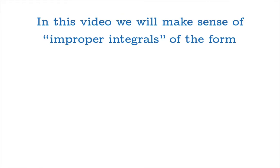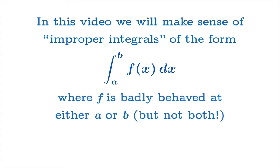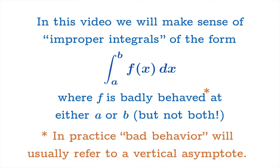So to be precise we're going to make sense of improper integrals that look like this. So what makes this improper? Well we're going to assume that f is badly behaved at either a or b but not both. Now as a practical matter bad behavior usually just means there's a vertical asymptote but as we'll see in an example later improper integration can cover more cases than simply vertical asymptotes.